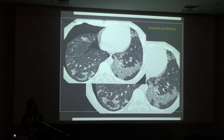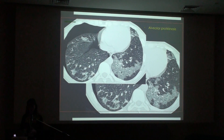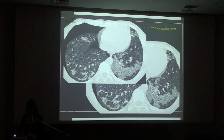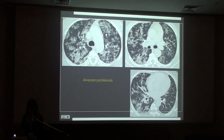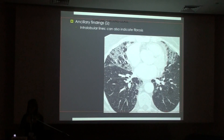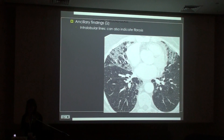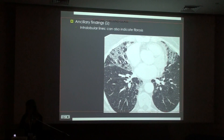The crazy paving pattern can be seen in lipoid pneumonia and in any disease with chronic alveolar filling. It can also be seen in mucinous adenocarcinoma, formerly called bronchoalveolar cell carcinoma. Sometimes intralobular lines can indicate fibrosis, but in that case they are nearly always associated with traction bronchiectasis.